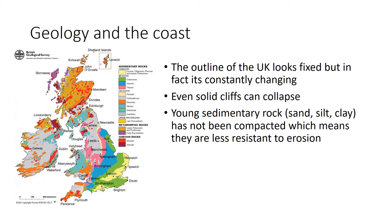The outline looks as if it is fixed and permanent — this is what we see on all of our maps — but in reality beaches and estuaries are a constantly changing environment as the tide moves in and out. So even solid cliffs can suddenly collapse.